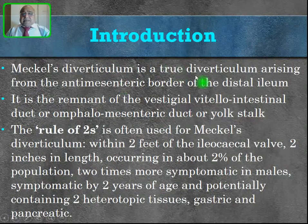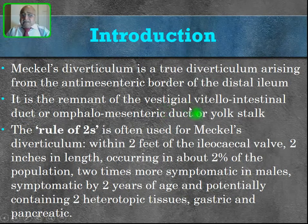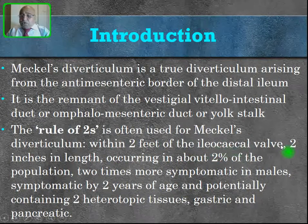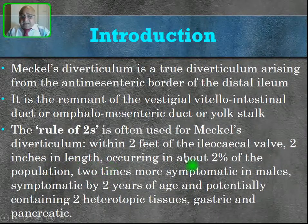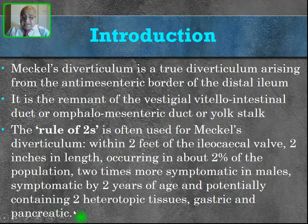Meckel's diverticulum is a true diverticulum arising from the antimesenteric border of the distal ileum. True diverticulum means it has all four layers of the intestine. It is the remnant of the vestigial vitelointestinal duct, also known as the omphalomesenteric duct or yolk stalk. The rule of twos: within two feet from the ileocecal valve, two inches in length, occurring in about two percent of the population, two times more symptomatic in males, symptomatic by two years of age, and potentially containing two heterotopic tissues — gastric and pancreatic.